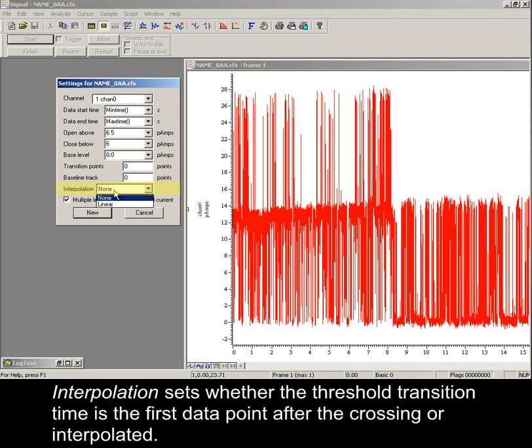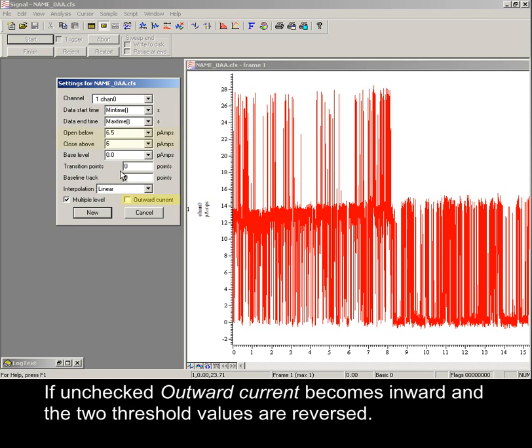Interpolation sets whether the threshold transition time is the first data point after the crossing, or interpolated. If unchecked, outward current becomes inward, and the two threshold values are reversed.